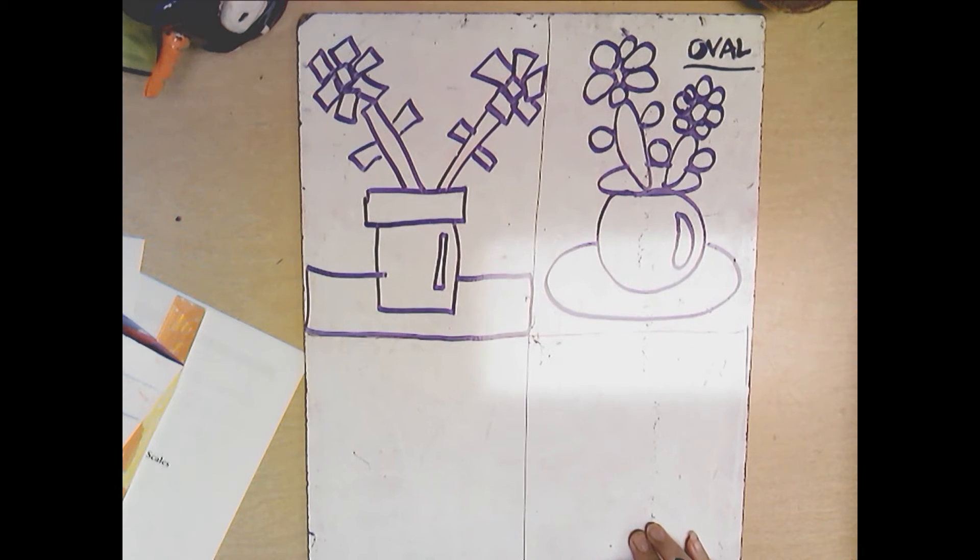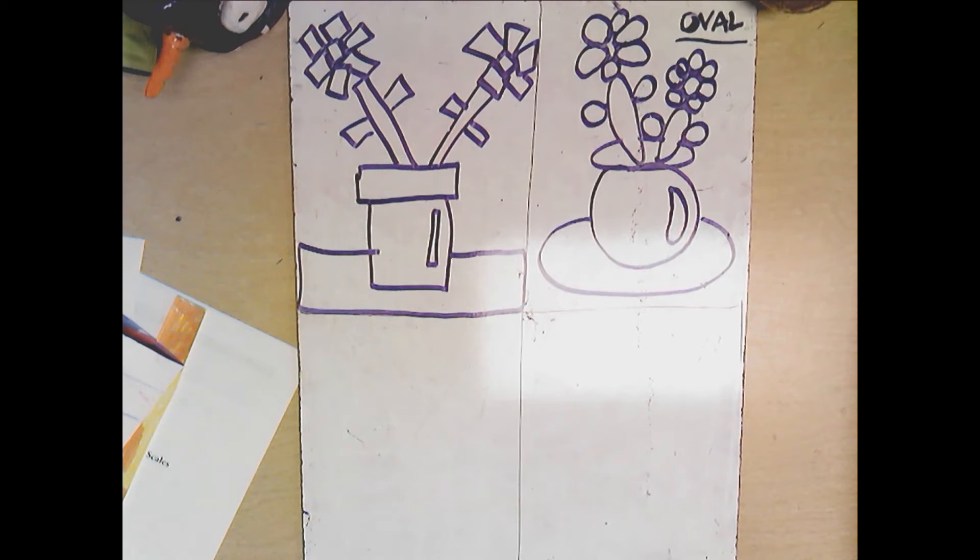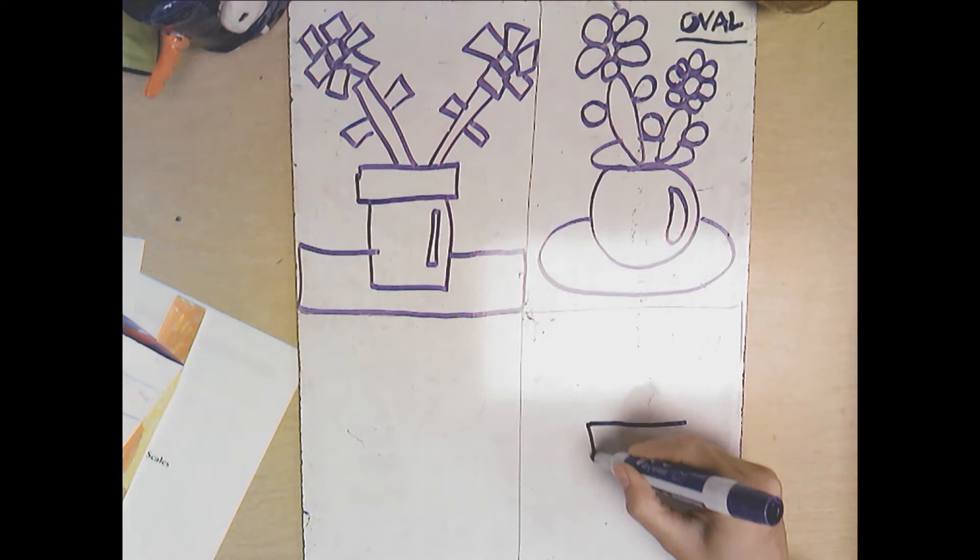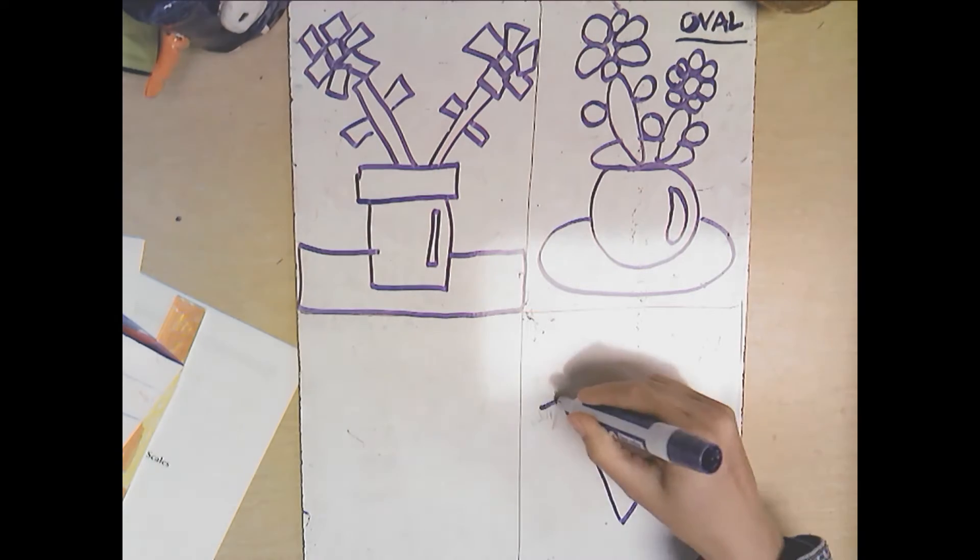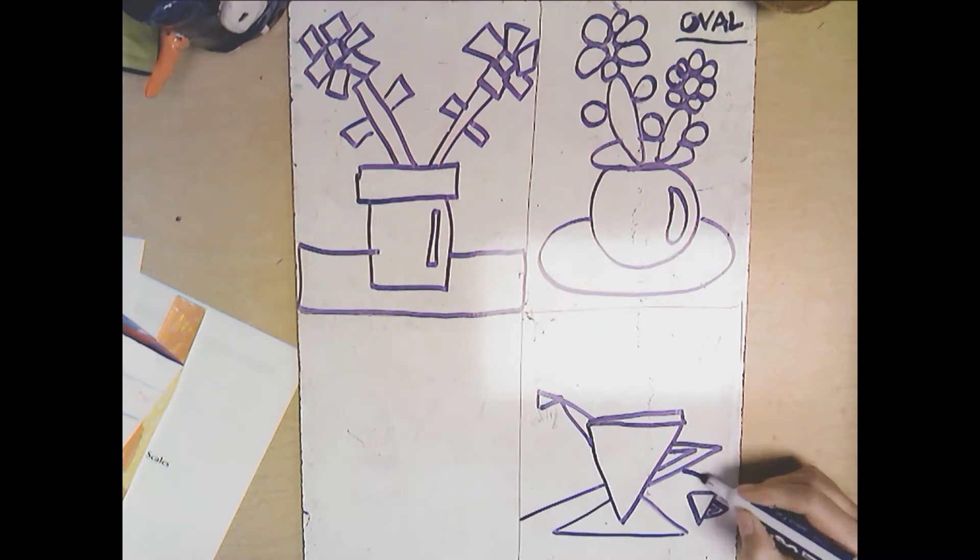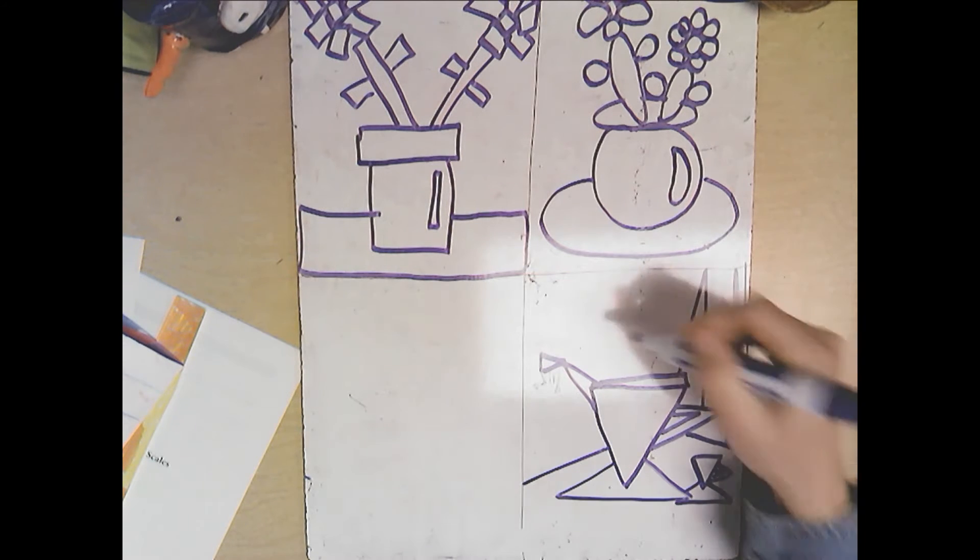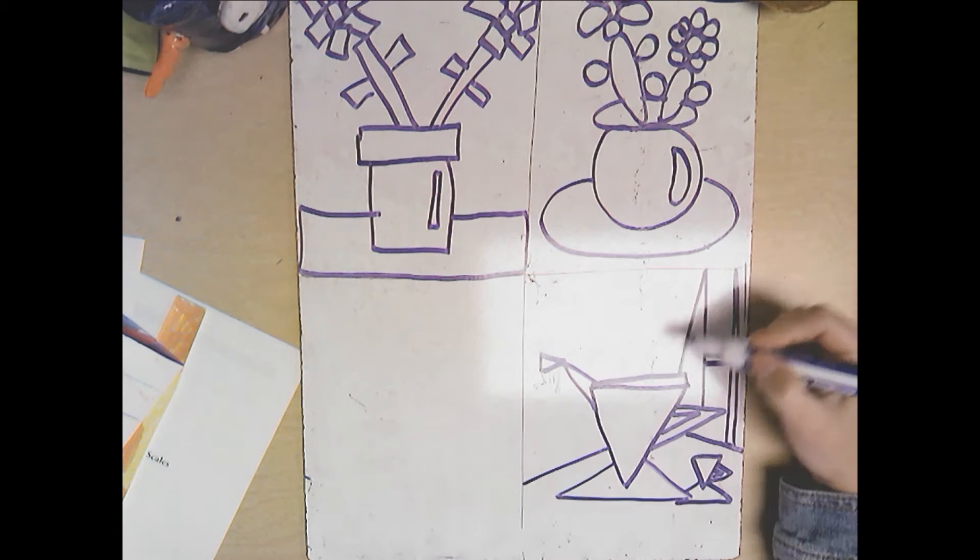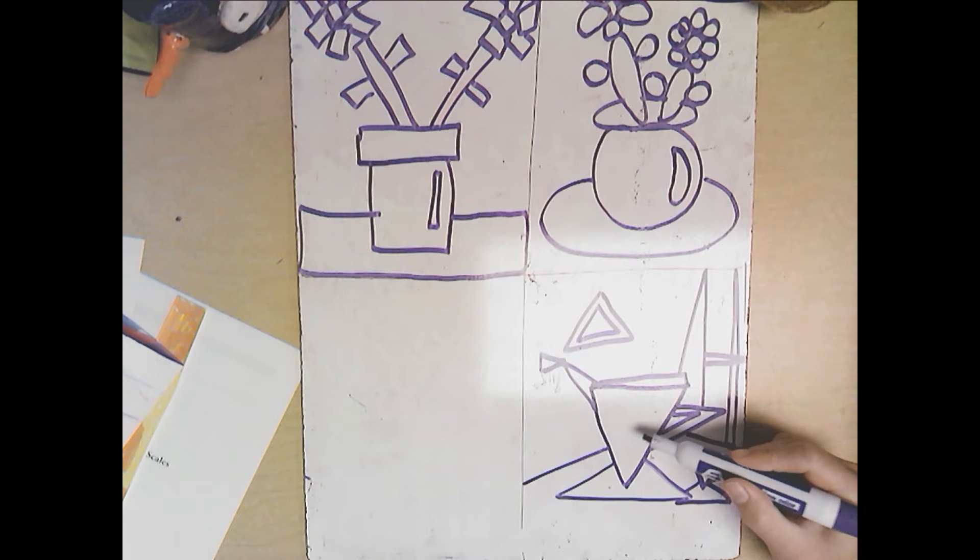Here my shape is going to be a triangle. So this is what I'm making here. I'm making kind of a still life. This is kind of like a teapot.